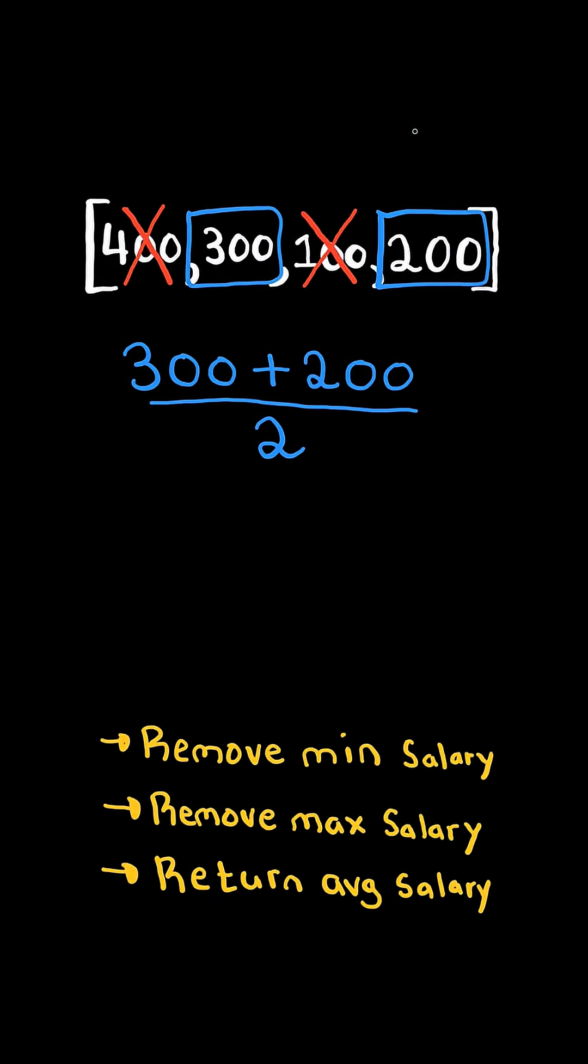In this case, the average is equal to 300 plus 200 divided by 2, but we return 250. We will solve this in O of n time.